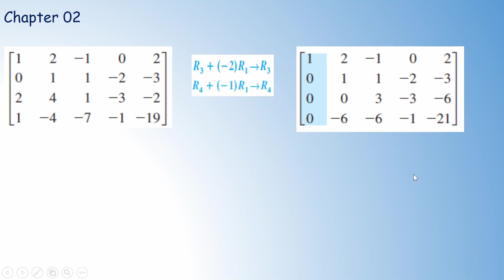We can see the pivot is 1. To make the entry in row 3 equal to 0, multiply the first row by minus 2 and add it to the third row. To make the entry in row 4 equal to 0, multiply the first row by minus 1 and add it to the fourth row. So the operation for the fourth row is: new R4 equals minus R1 plus R4.